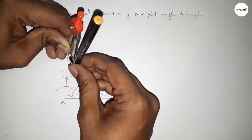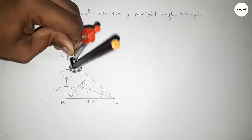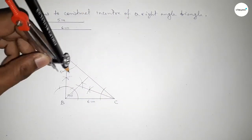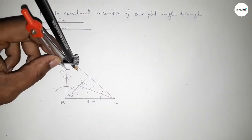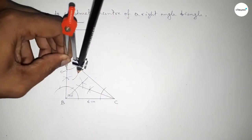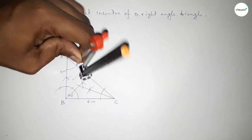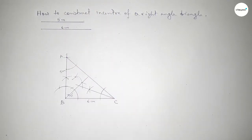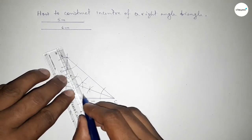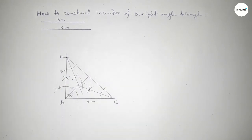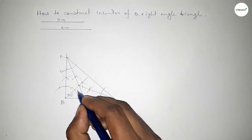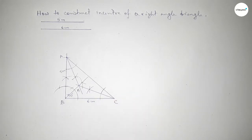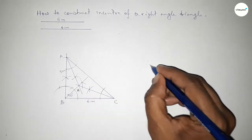Next bisecting angle A. Putting the compass here, taking any length and drawing an arc. With the same length, putting the compass here and drawing an arc, then cutting here. Both curves intersect at a point. Now joining this bisector of angle A.